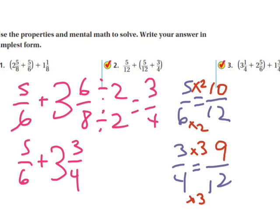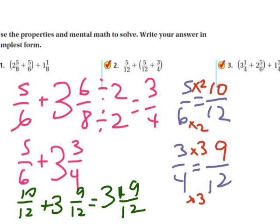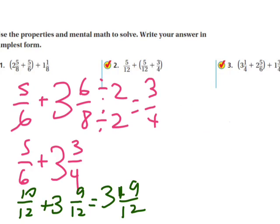And therefore, I can change these fractions to 10 twelfths plus 3 and nine twelfths. 3 plus nothing is 3. 10 twelfths plus 9 twelfths is 19 twelfths. And I'm going to erase this to give myself more room. And I have an improper fraction here, so I just need to change this to a mixed number. So 19 over 12.